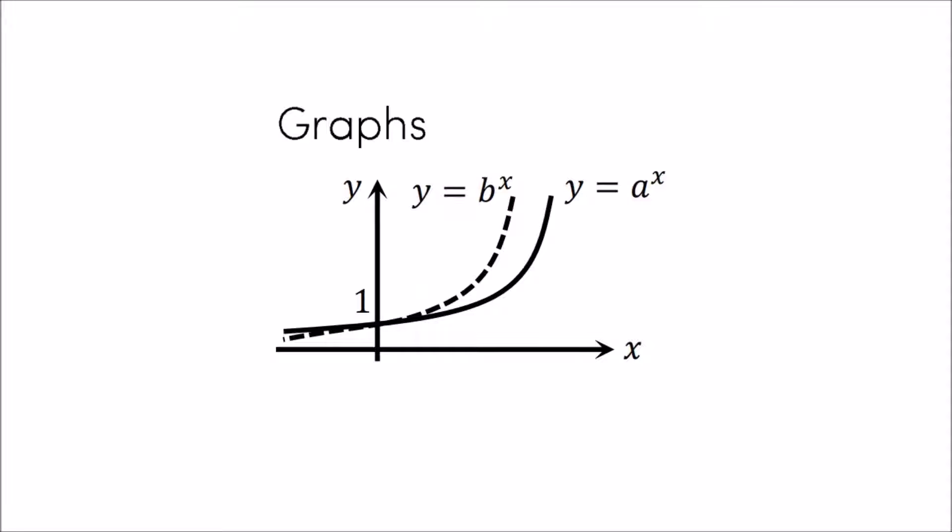Let's imagine why they go steep and shallow like this. If a is 2 then the graph will be of things like 2 to the power of 1, 2 to the power of 2, 2 to the power of 3 which would make 2, 4, 8. The numbers are getting bigger.